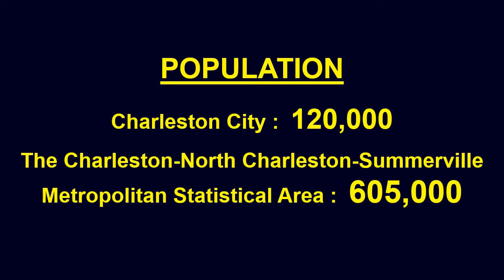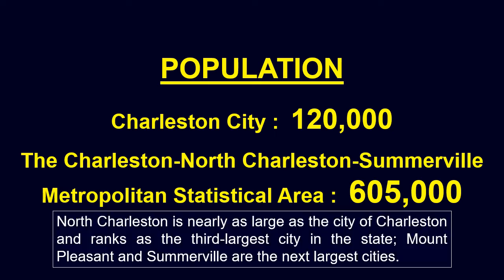Charleston has a population of 120,000, making it the second most populous city in South Carolina, close behind the state capital, Columbia. The Charleston–North Charleston–Somerville Metropolitan Statistical Area consists of three counties — Charleston, Berkeley, and Dorchester — and has a total population of about 605,000. North Charleston is nearly as large as the city of Charleston and ranks as the third-largest city in the state. Mount Pleasant and Somerville are the next-largest cities.